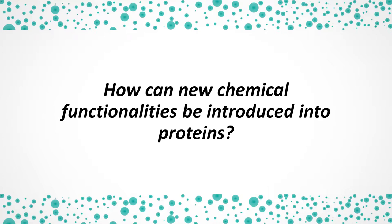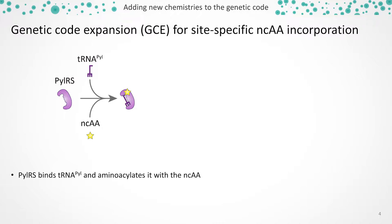It can only be envisioned what might be possible if more chemical functionalities could be introduced into proteins and if a protein could basically cover the entire chemical spectrum. One technology ideally suited for this is genetic code expansion, which allows site-specific incorporation of a non-canonical amino acid into a protein of interest within a cell.